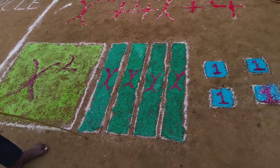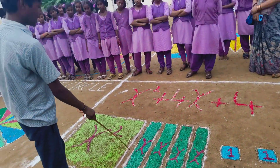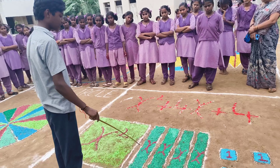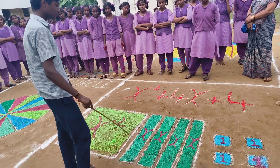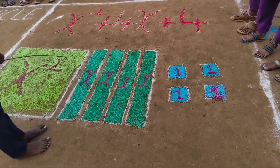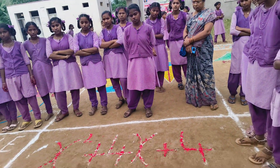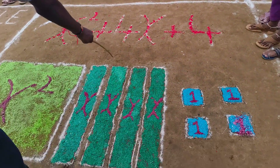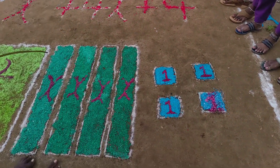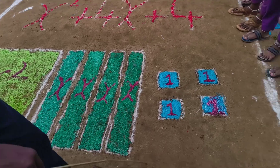This is a rectangle whose length is x and width is 1, so x into 1 equals x. There are 4 rectangles, so 4x is represented with 4 rectangles.